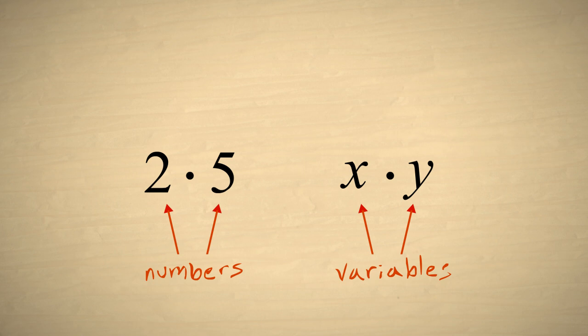Often, instead of using specific numbers we use letters to indicate any possible number. These letters are referred to as variables since unlike numbers which always have a specific value, their value can vary to represent any possible value.